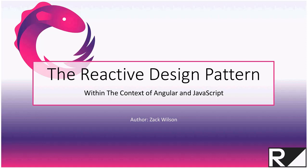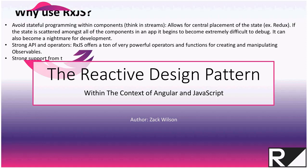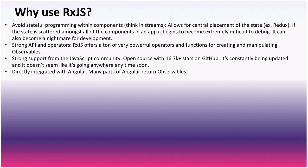Let's go ahead and get started. Why use RxJS? We use RxJS mainly to avoid stateful programming within components and to think in streams. It allows for central placement of state — for example Redux — and lets you use the operators that RxJS provides. It has strong support from the JavaScript community and 16,700 stars on GitHub, and it's constantly being updated.